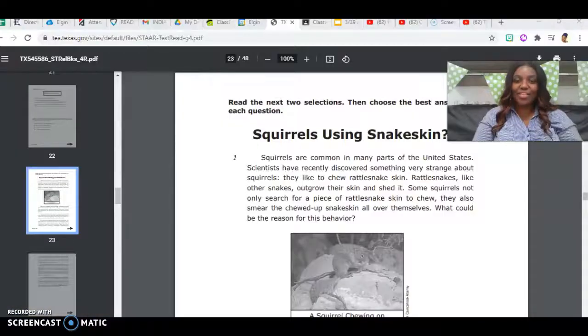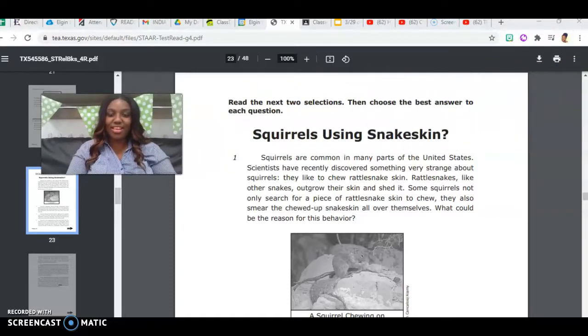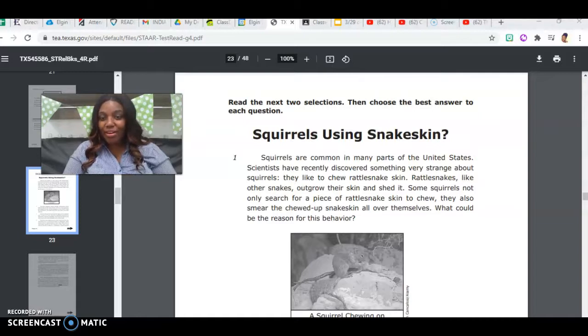So our first passage is Squirrels Using Snake Skin. Squirrels are common in many parts of the United States. Scientists have recently discovered something very strange about squirrels. They like to chew rattlesnake skin. Rattlesnakes, like other snakes, outgrow their skin and shed it. Some squirrels not only search for a piece of rattlesnake skin to chew, they also smear the chewed up rattlesnake skin all over themselves.